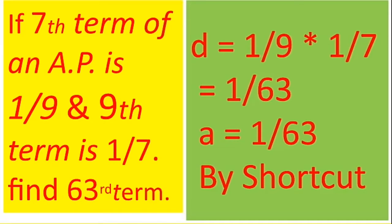Welcome to shortcuts in aptitude. If the 7th term of an AP is 1 by 9 and the 9th term is 1 by 7, find the 63rd term.